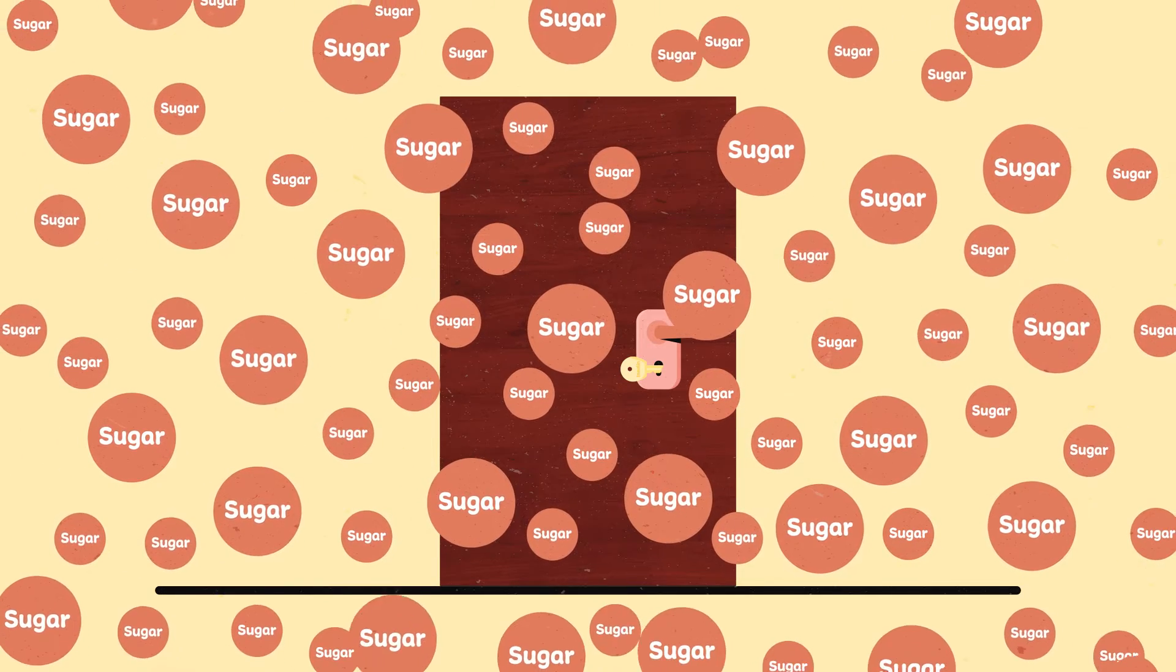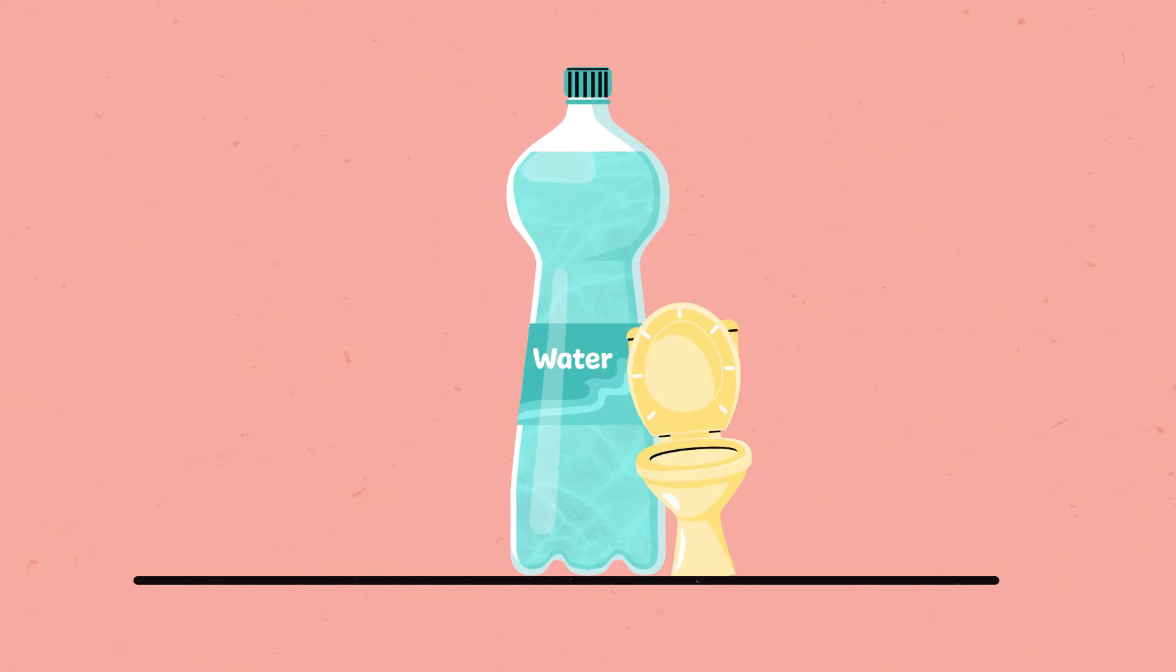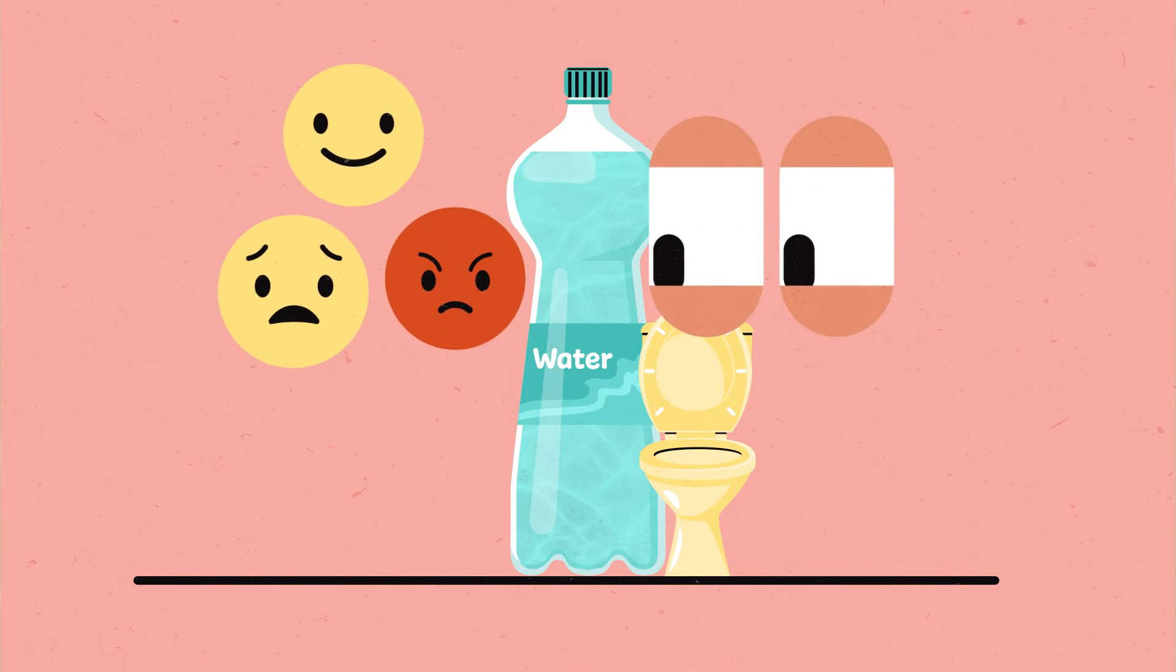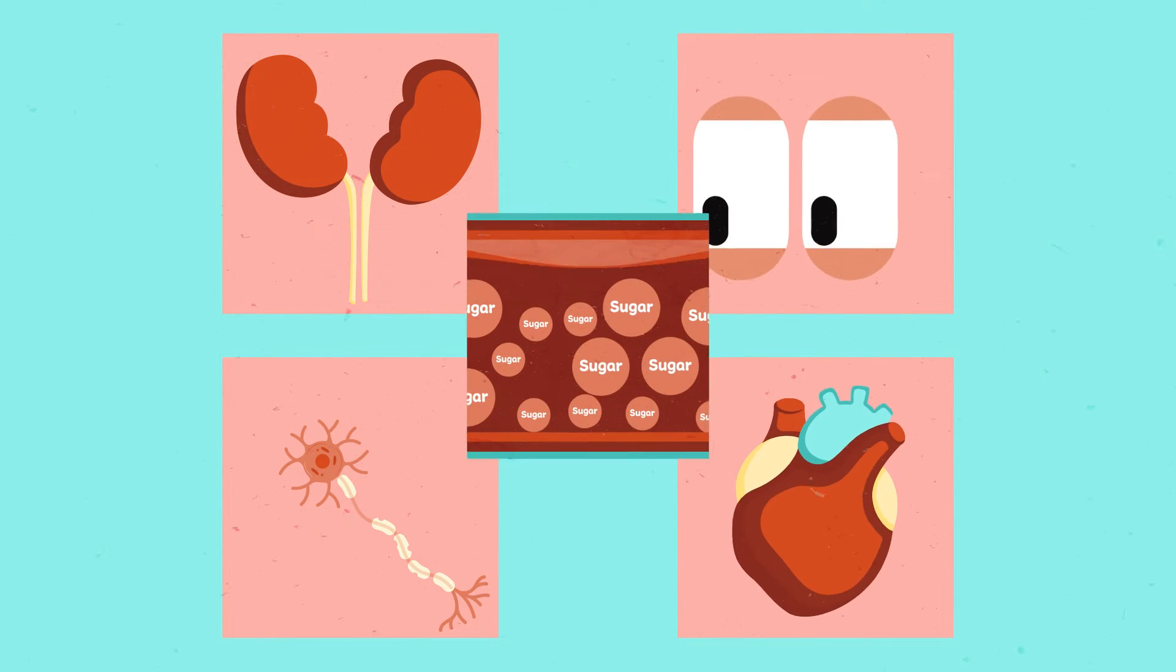When sugar builds up in your blood and gets too high, it makes you thirsty, need to go to the toilet a lot, and affects your vision and mood. If your blood sugars stay high for too long, this can cause long-term damage to your kidneys, eyes, nerves, heart, and blood.